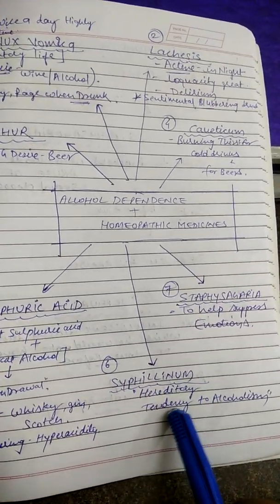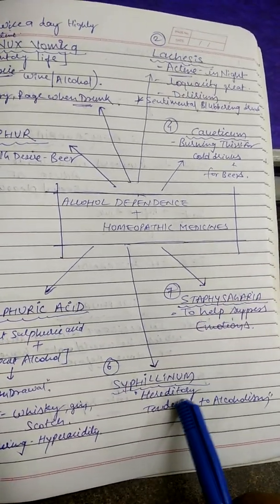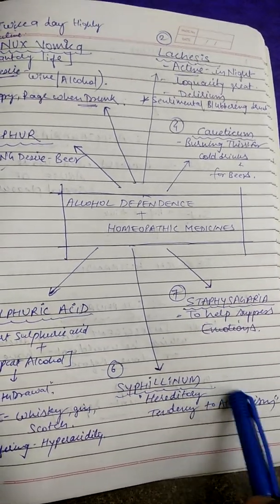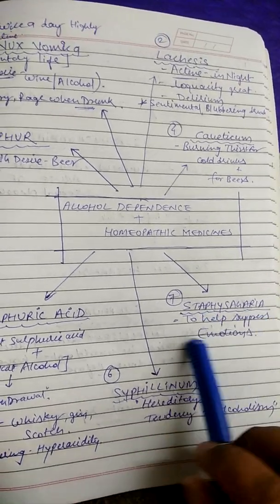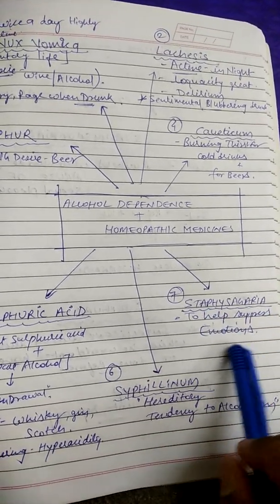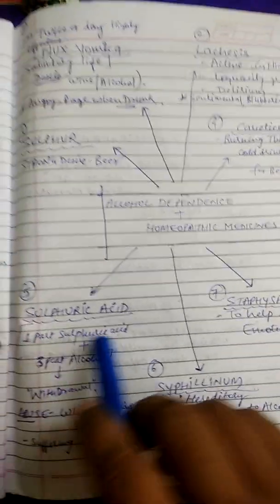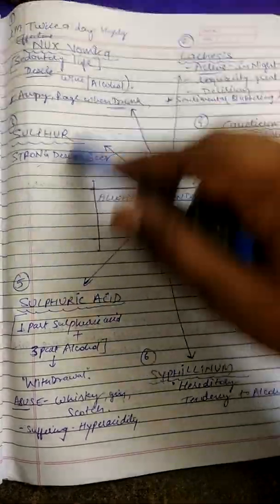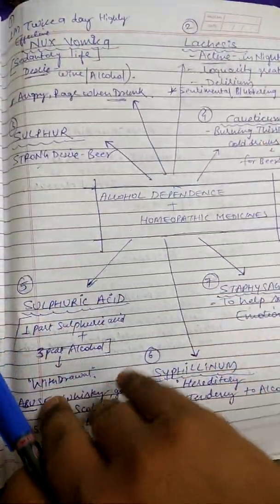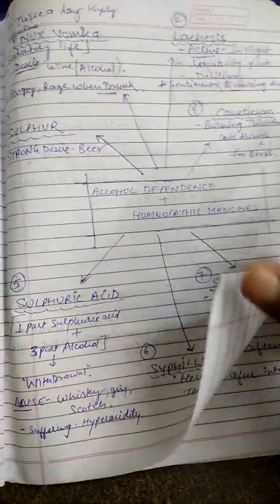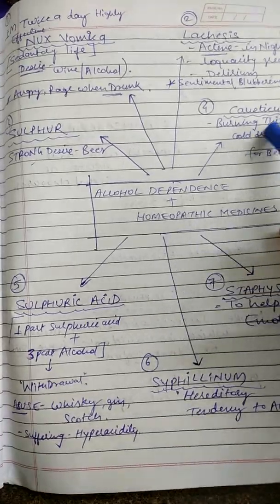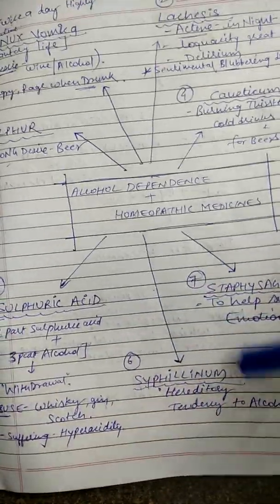Then Syphilinum — hereditary alcohol dependence and tendency to alcoholism. Then Staphysagria — to help suppress emotions. Yeh saari medicines jo alcohol dependence mein work karti hain: Nux Vomica, Lachesis, Sulfur, Causticum, Sulfuric Acid, Syphilinum, and Staphysagria.